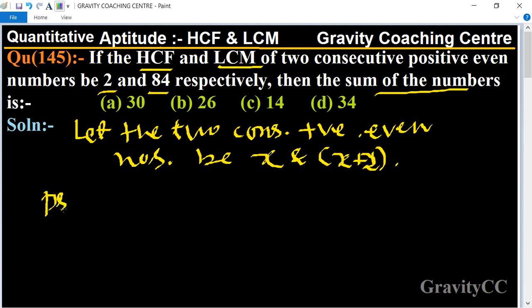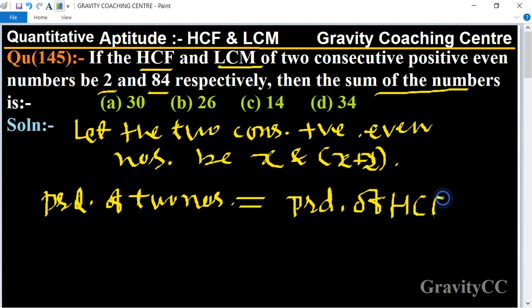Product of two numbers equals product of HCF and LCM. So the product of two numbers means x and x plus 2 equals product of HCF and LCM, so 2 into 84.